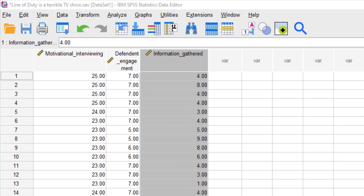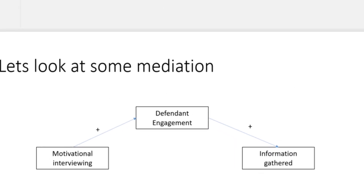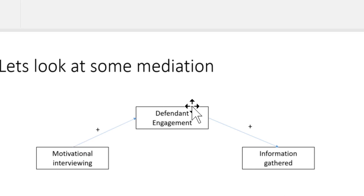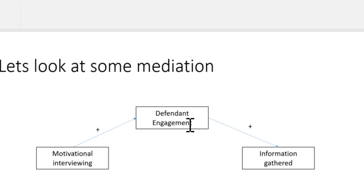What we're interested in is exploring this mediation — this indirect effect. We're going to look at the effect of motivational interviewing on defendant's engagement, and the extent to which this influences information gathered. Our IV is motivational interviewing, our mediator is defendant's engagement, and our dependent variable is information gathered. We expect a positive association between motivational interviewing and defendant's engagement, and again a positive association between defendant's engagement and information successfully gathered. To do the joint significance test, we need the association between motivational interviewing and defendant's engagement, and then the association between defendant's engagement and information gathered, while controlling for motivational interviewing.